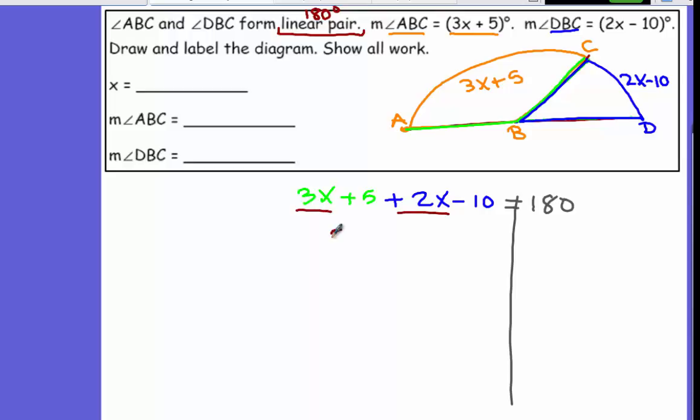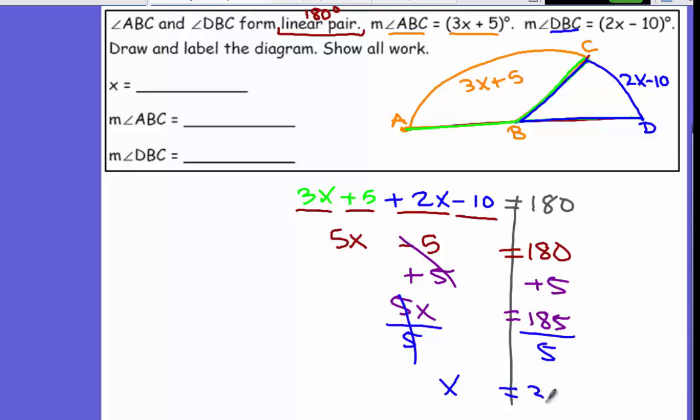So 3X plus 2X, that's 5X. So 5X minus 5 equals 180, plus 5 to eliminate the negative 5 on the left. So 5X equals 185, and then you divide by 5, so X equals 37.